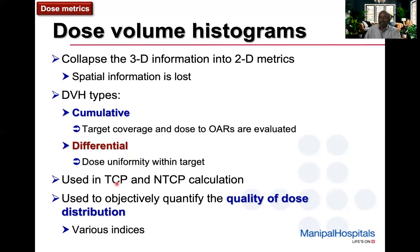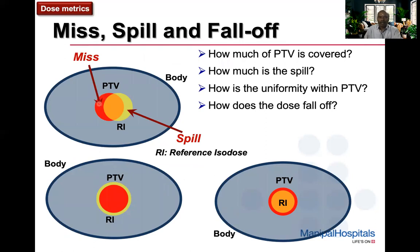DVHs are also used in calculating tumor control probability and normal tissue complication probability, and to objectively quantify dose distribution quality using various indices. What we want is a perfect overlap between the PTV and the reference isodose, but that will never happen. There will always be a part of the PTV that is missed and a part of the reference isodose that spills onto normal tissue. We need to evaluate both the miss and the spill, and how the dose falls off away from the PTV.